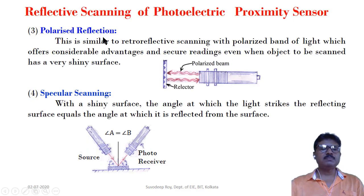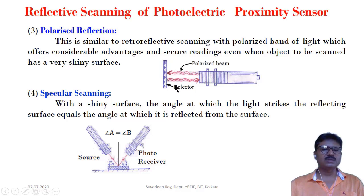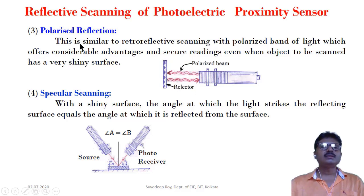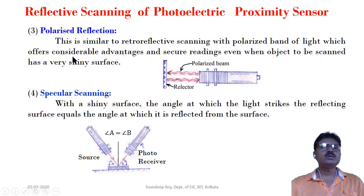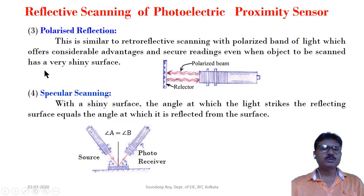Next is polarized reflection. This is a very accurate type, using polarized light. It is similar to retroreflective scanning but uses a polarized band of light, which offers considerable advantage and secure reading even when the object to be scanned has a very shiny surface — the difference can still be detected.